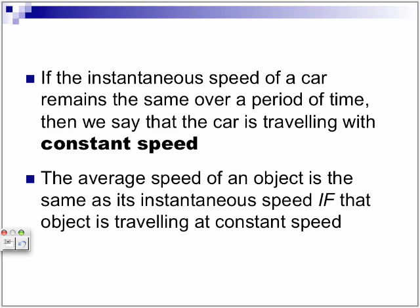Instantaneous speed is different from constant speed, and instantaneous speed is different from average speed. But if the object is traveling consistently, imagine you having your car in cruise control, your car is in cruise control at 100 kilometers per hour and it doesn't change.